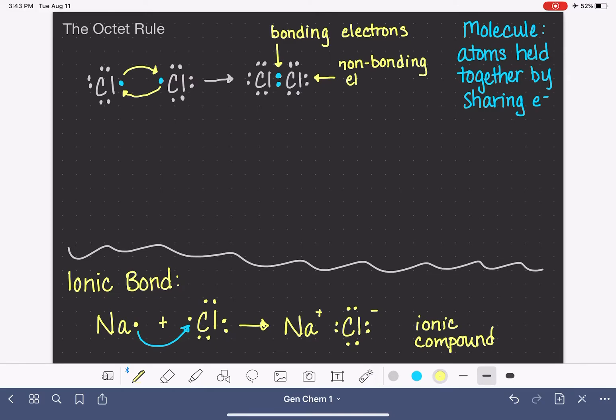we refer to all of these electrons as non-bonding electrons because they're not taking part in the bonding between the two chlorines. We also refer to them as lone pairs. They are lone pairs of electrons just hanging out by themselves.